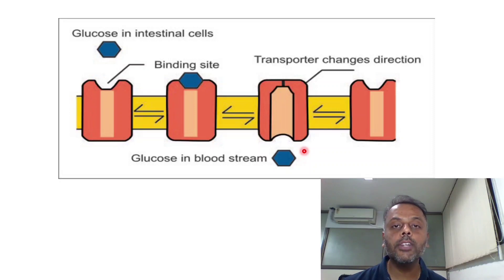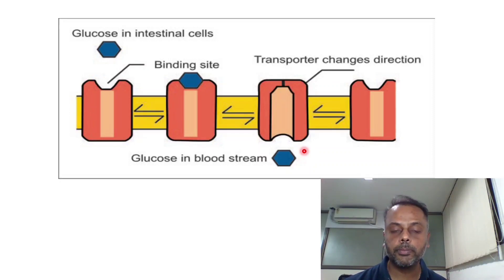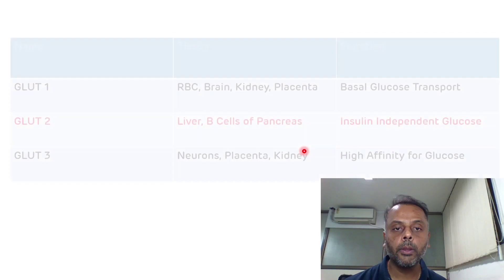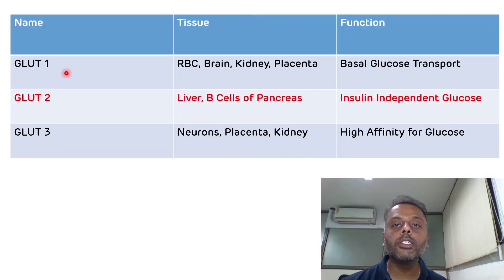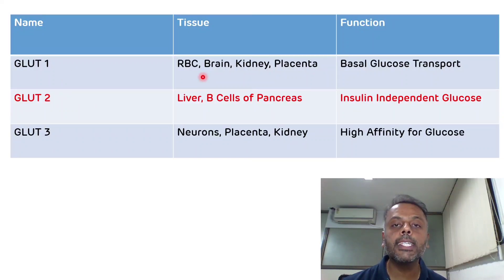Now we will see the various examples of glucose transporters. The first example is glucose transporter 1 (GLUT1), which is important for basal glucose transport in red blood cells, brain, kidney, and placenta.